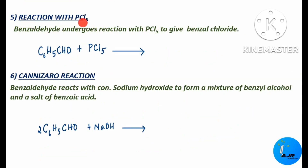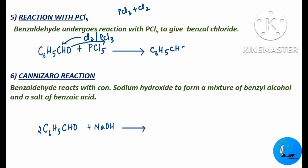The next reaction is the reaction with PCl5. Benzaldehyde undergoes reaction with PCl5 to give benzal chloride. PCl5 is split as Cl2 and PCl3. The Cl2 combines with this carbon and the oxygen gets displaced. The product is C6H5CHCl2 plus POCl3.